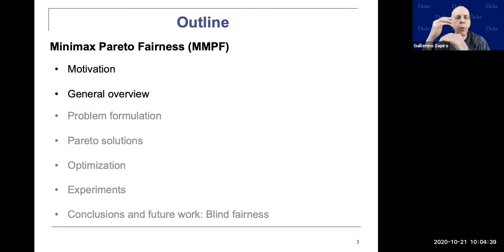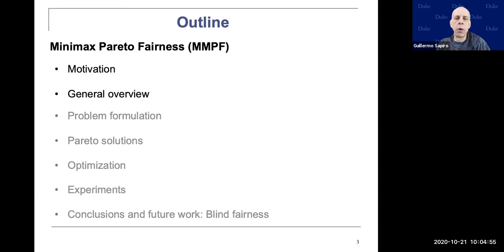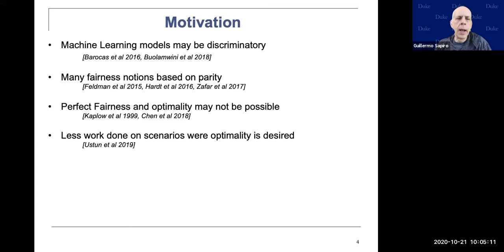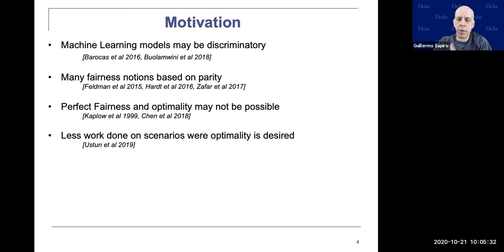I'm going to split the talk into two and a half parts. First, an overview of the motivation and the general problem. Then details, and at the end our new work on blind fairness — fairness with no demographics — and why that connects to new directions in robustness of learning. There is a tremendous amount of literature on fairness; we just started working this year from a slightly different perspective than most of the literature.